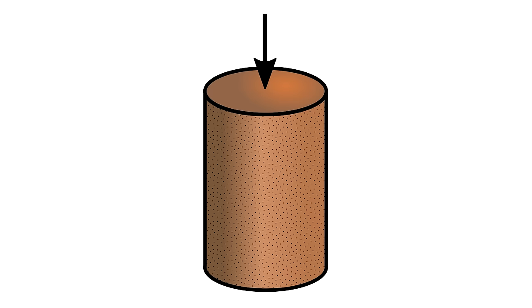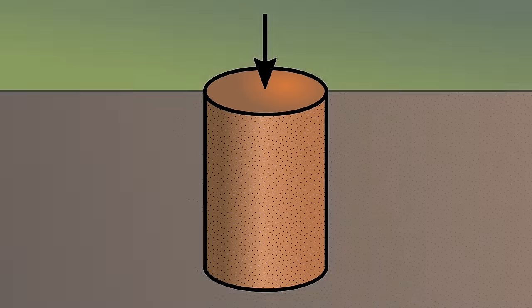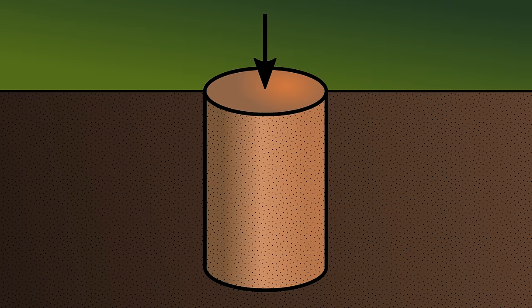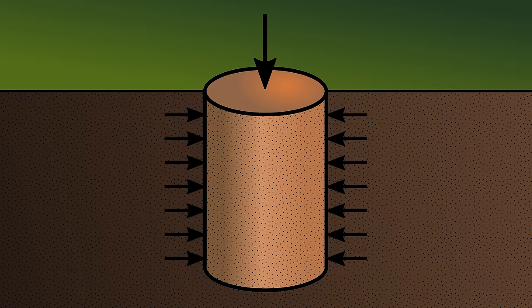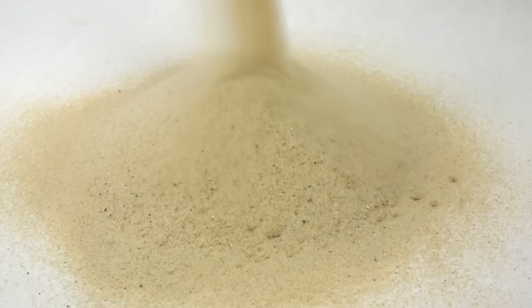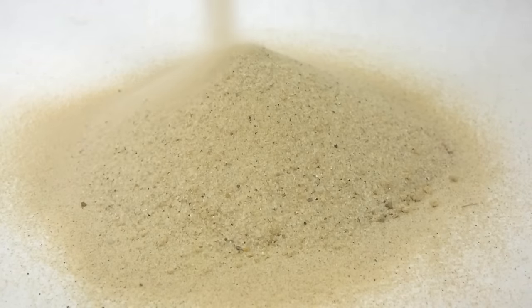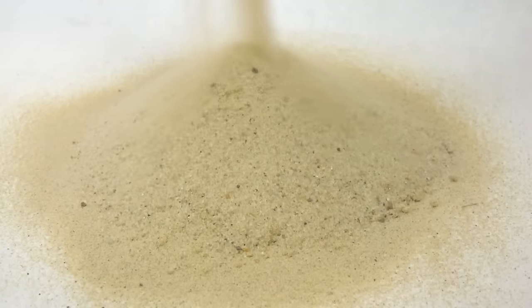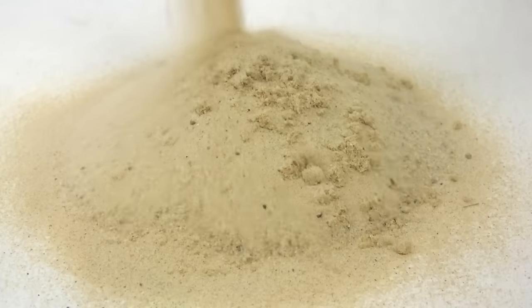Let's look back at our sample of soil. If we put the sample back into the ground, now it's surrounded by additional soil that can apply horizontal pressure. This is called confining pressure, and it helps balance out vertical forces like the weight of the soil itself. This confining pressure is the reason that a granular material can be stable at a slope, but usually won't be stable vertically.